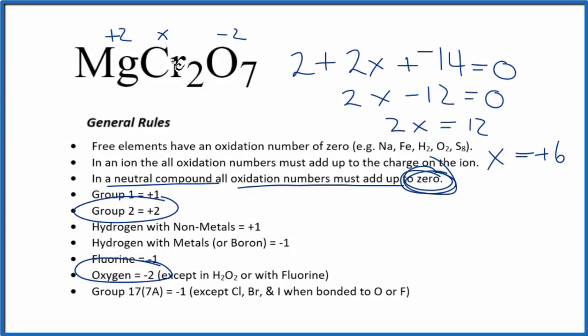And that's going to be the oxidation number on each of these chromium atoms. So each chromium atom has an oxidation number of plus six. And those are the oxidation numbers for MgCr2O7.